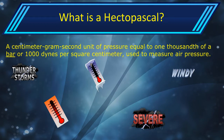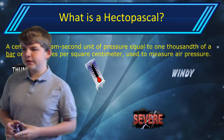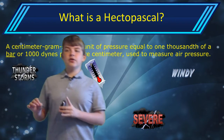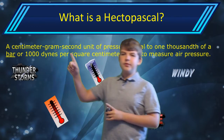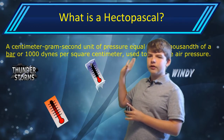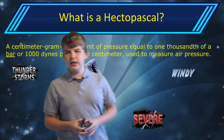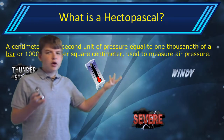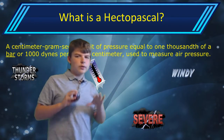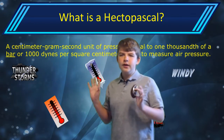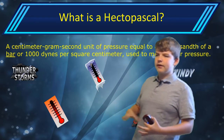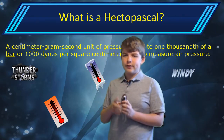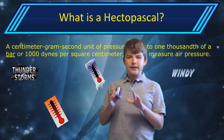Let's get into this. So what exactly is a hectopascal? The technical definition: it's a centimeter-gram-second unit of pressure equal to one thousandth of a bar, or one thousand dynes per square centimeter. But basically, this is a measurement of pressure that's commonly used in weather.